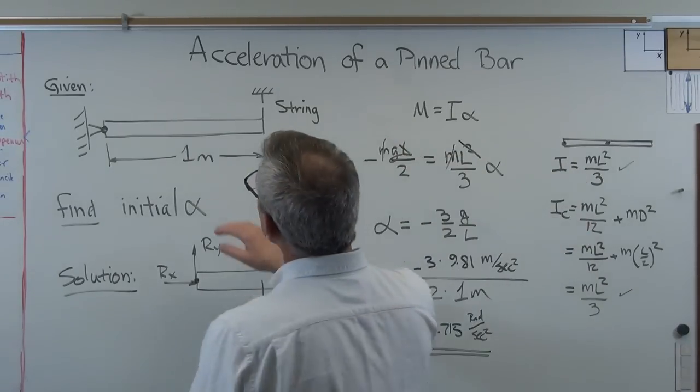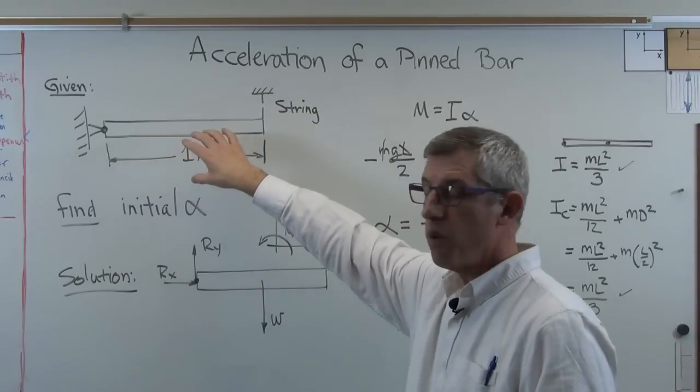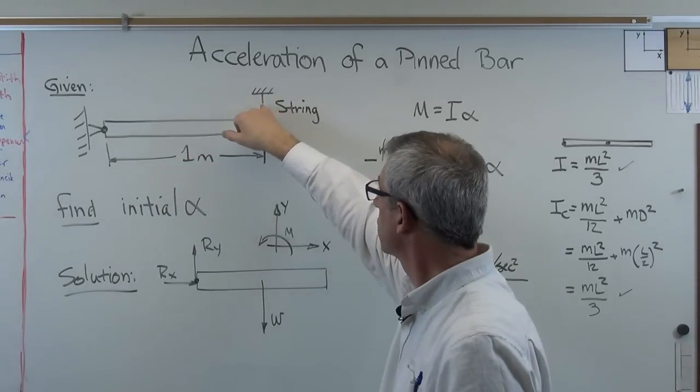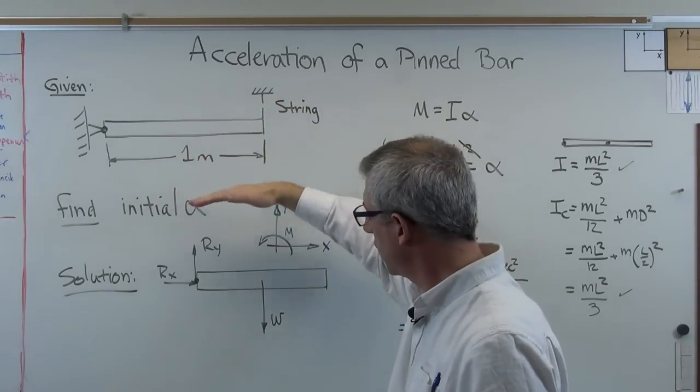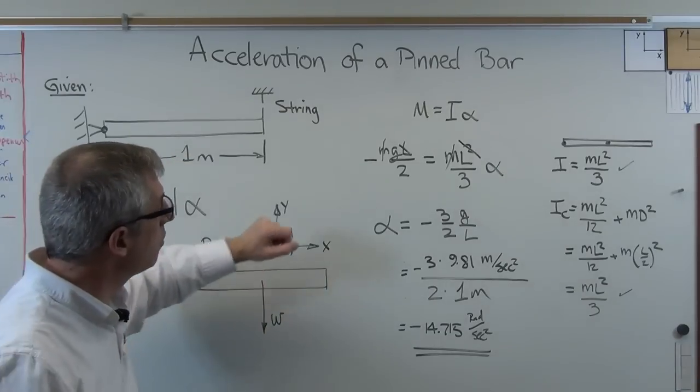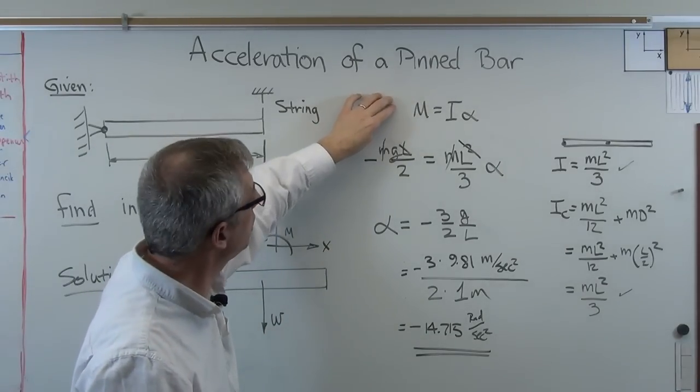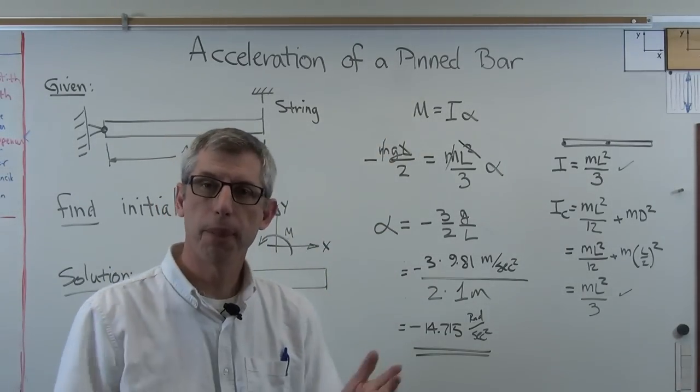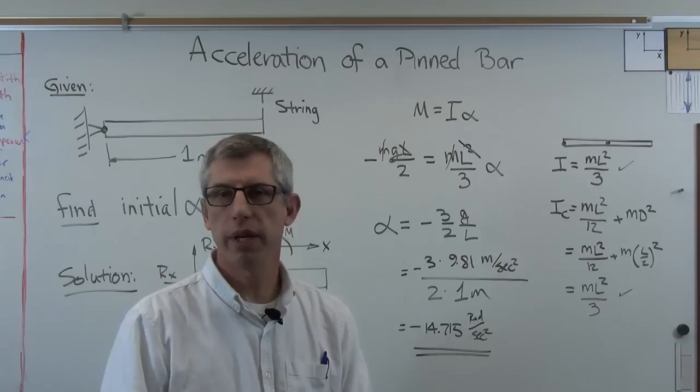This was an easy one today, wasn't it? Started out with a bar, pivoted on one end, supported by a string on the other, cut the string, and it starts to fall under the force of gravity. So we did our free body diagram, wrote out the equation of motion, and solved it for alpha. There you go. I hope this helps, and I'll see you next time.